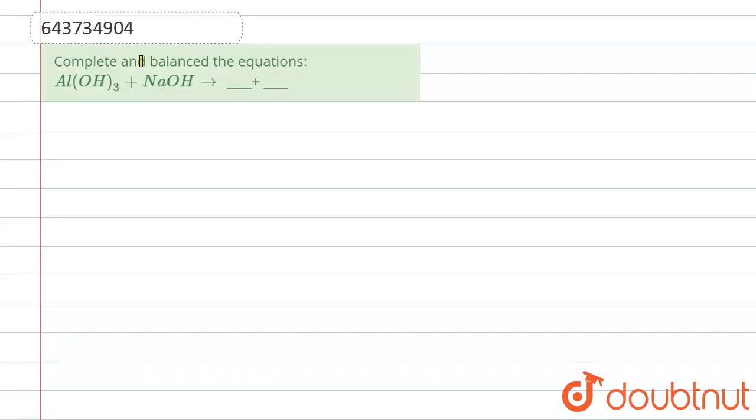Complete and balance the equation. Right, so we have the equation Al(OH)3 plus NaOH. So let us see, let us write the reaction. The reaction is: